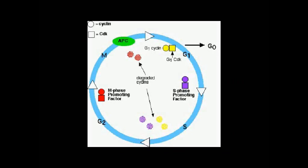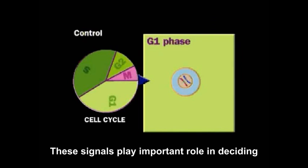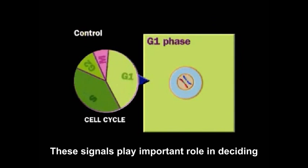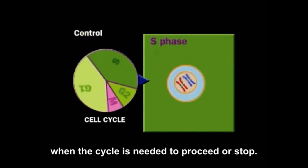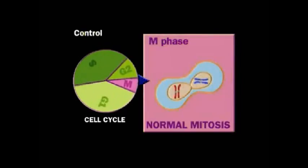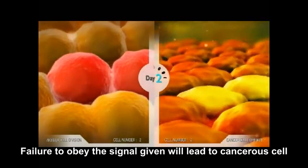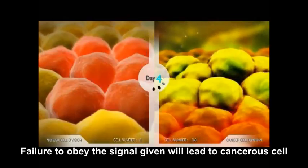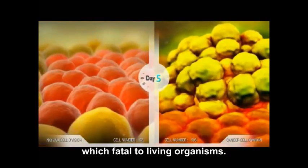The cell cycle is regulated by various signals. These signals play an important role in deciding when the cycle needs to proceed or stop. Failure to obey the signals given will lead to cancerous cells, which is fatal to living organisms.